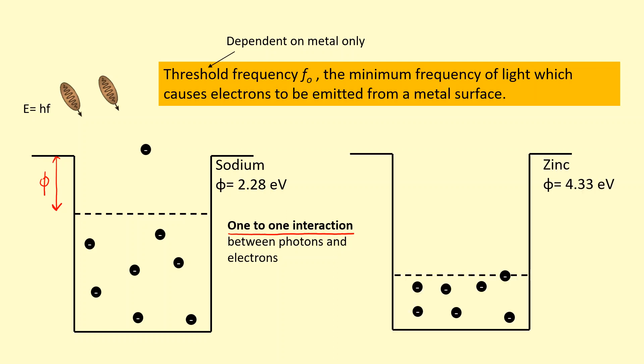You can have different metals, for example zinc, which has got a higher work function. So the minimum frequency required for the electrons to escape, the threshold frequency, would be higher for zinc. If we shine orange light on zinc, it won't cause a photoelectric effect because that won't be enough energy for the electron to escape. But if we shine violet light, that probably will be enough energy, above the threshold frequency, for the electron to escape.